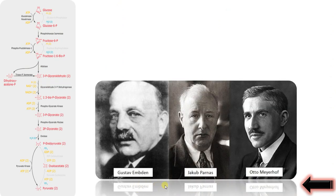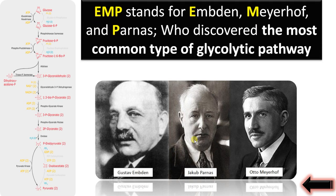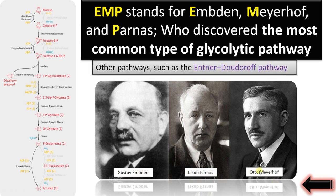Question number four: why is glycolysis also known as the EMP pathway? These are the three scientists — Gustav Embden, Jakub Parnas, and Otto Meyerhof. EMP stands for Embden, Parnas, and Meyerhof, who discovered the most common type of glycolysis pathway occurring in the majority of organisms. There are other pathways like the Entner-Doudoroff pathway in some gram-negative bacteria, but the EMP pathway is the most common, occurring in all organisms.